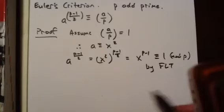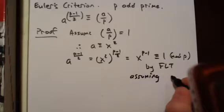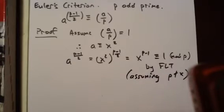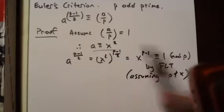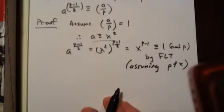This is, of course, assuming that P does not divide X, and this is true because of this equation. P can't divide X because P does not divide A. Okay, and that proves half of it.